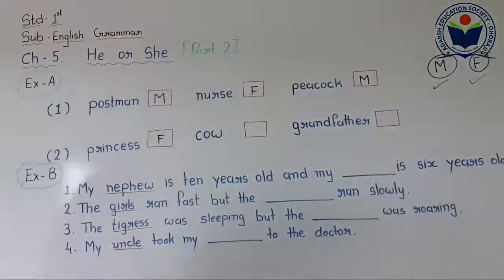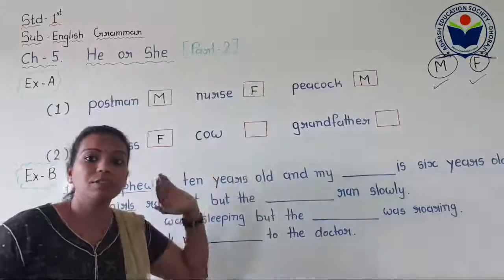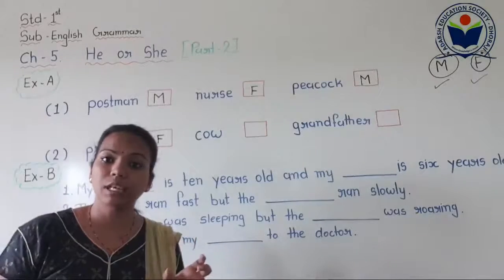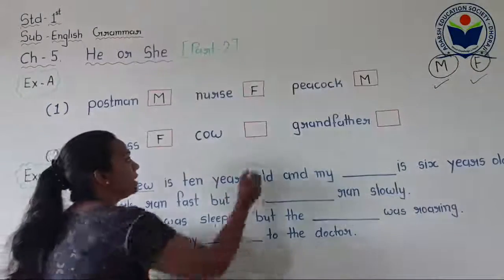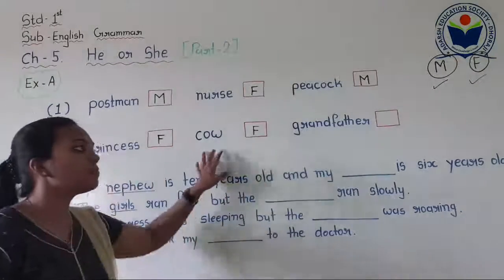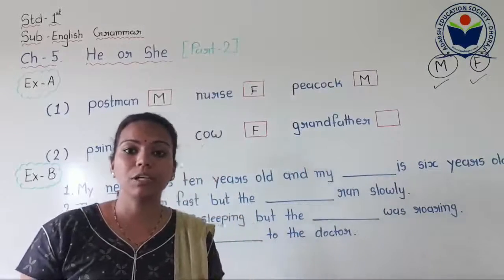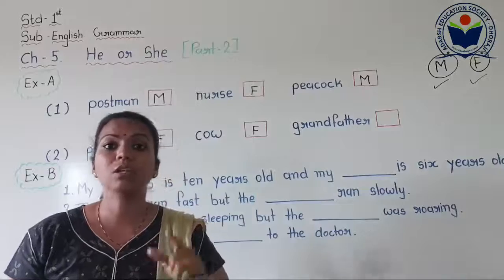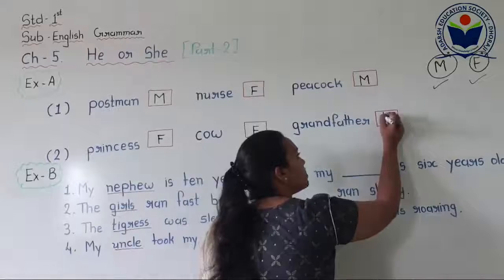Cow — can you tell me? Cow is the female animal, so we write capital F. Just for information, the male word for cow is bull. Now the last one on this page is grandfather. Can you tell me? The word grandfather is used for male or female? We use it for male, so we write capital M.